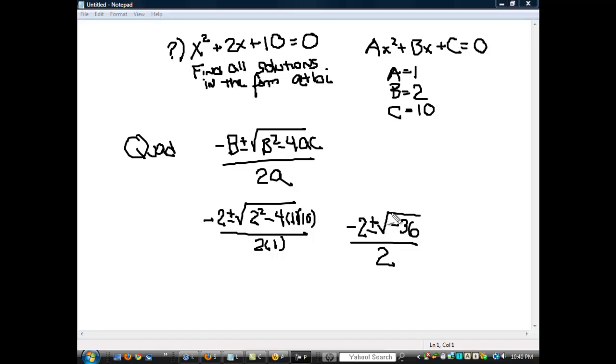Whenever there's a negative sign inside a radical, you can always take it outside and it becomes an i. So this is the same as negative 2 plus or minus i times the square root of 36, all over 2.